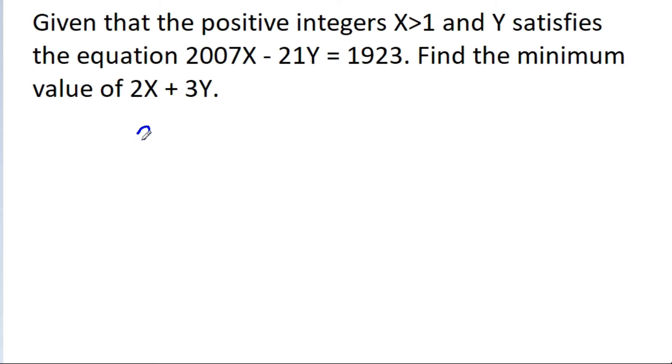So the given equation is 2007x minus 21y is equal to 1923, and now 3 is a factor of only 3 terms. So if we take 3 common, then here we will get 669x minus 7y that is equal to, and 1923 is 3 times 641.